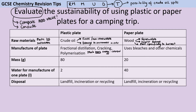Thinking about the manufacture: the plastic plate requires fractional distillation, followed by cracking, followed by polymerisation. From your Unit 7 studies you'll know that all of those processes take a huge amount of energy, so this is a very energy-intensive process. Making paper plates won't involve as much energy, although it will still involve some, but it uses bleaches and other chemicals. Those are going to be bad for the environment, but depending on how the paper plate is manufactured, it may be possible to stop those nasty chemicals from entering the environment. So although they could be really harmful, they don't necessarily have to be. On balance, the paper plate is probably still winning.